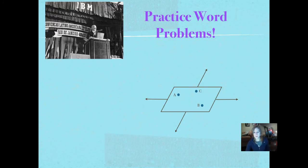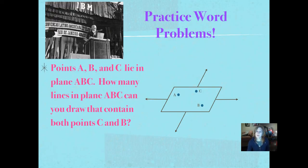We are going to practice a word problem tonight. Here it is. You can see points A, B, and C lying in plane ABC. How many lines in plane ABC can you draw that contain both points C and B? Go ahead and pause that. You could see how many lines could you possibly draw that contain both points C and B. Did you write one line? This pencil can be put through points C and B just one time. There's no other way to contain both points in one line. So it's kind of a trick question, but it was kind of fun to try, wasn't it?